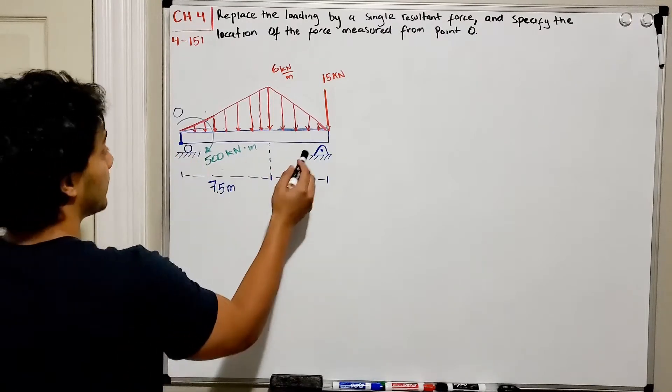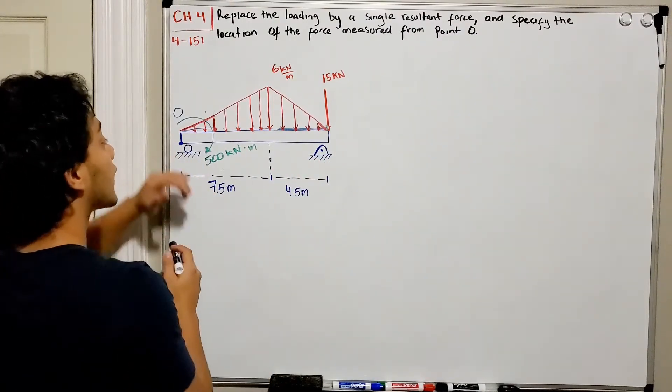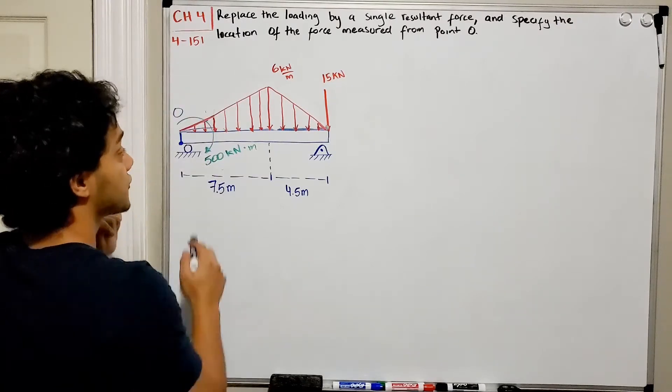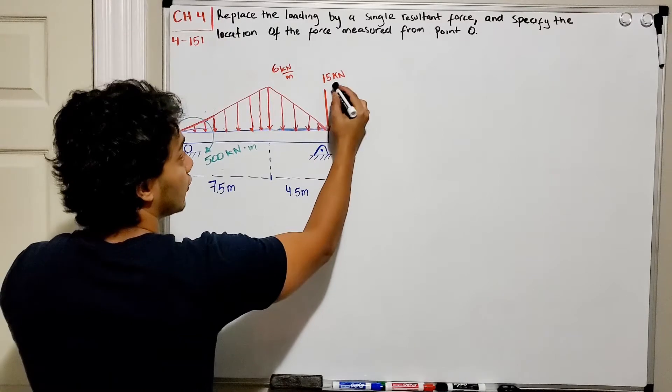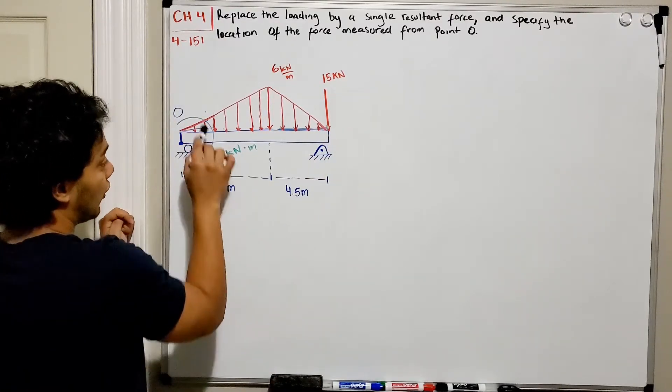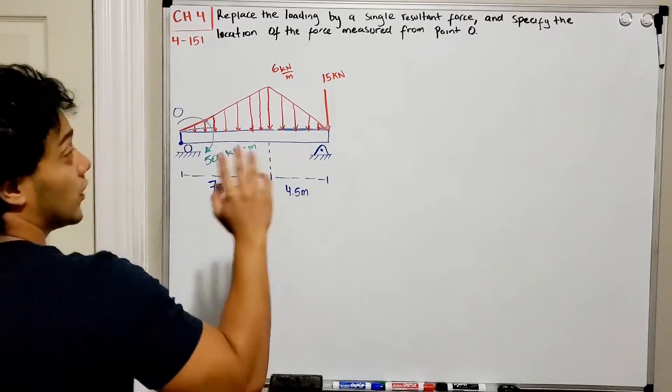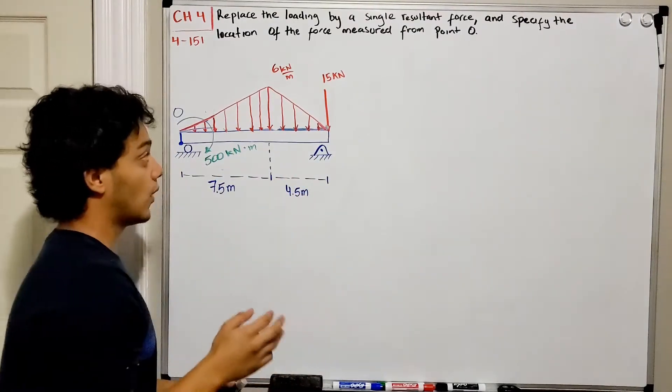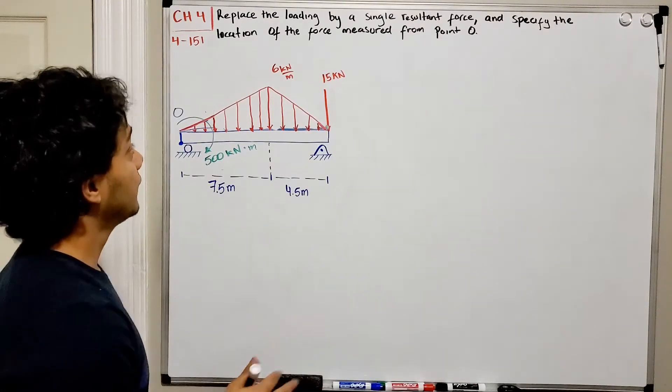We got this beam supported by a roller on this side and supported by a pin on this side. We have this triangular shape distributed load and we have a big load of 15 kN over here and we also have a moment of 500 kN·m. They want us to find the resultant force, so we need to add all the forces.